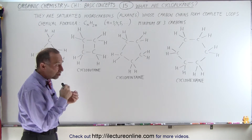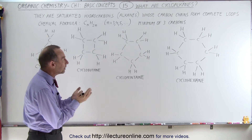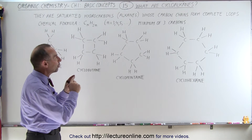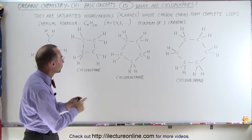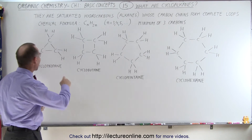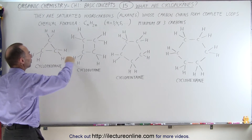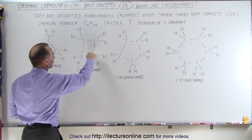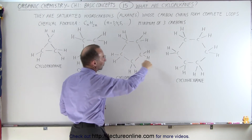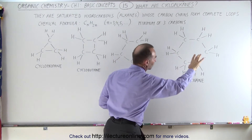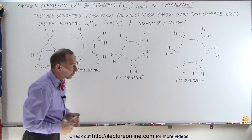In addition to that, the carbon chains making up the alkane form a complete loop. Here we have an example where we have three carbons forming a loop, four carbons forming a loop, five carbons, six carbons, and so forth. We've only shown you four examples.